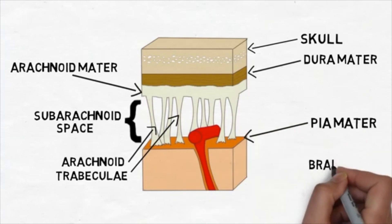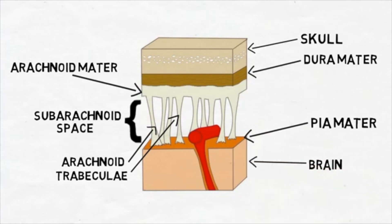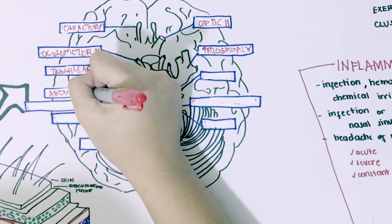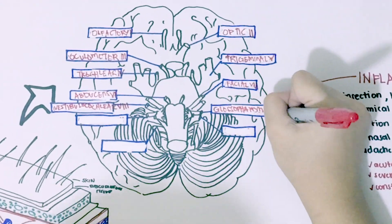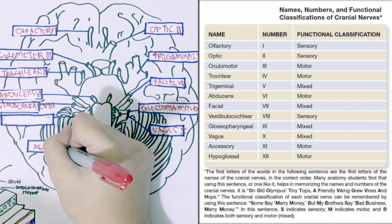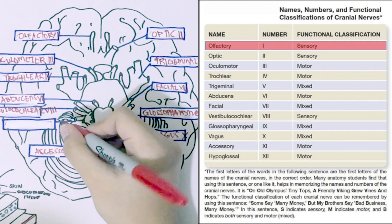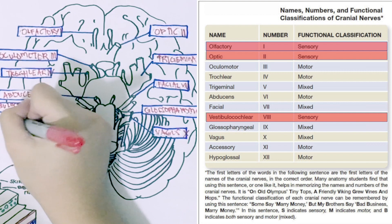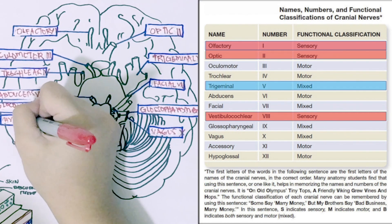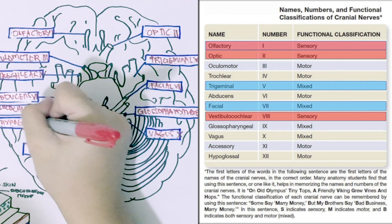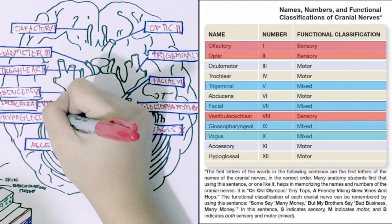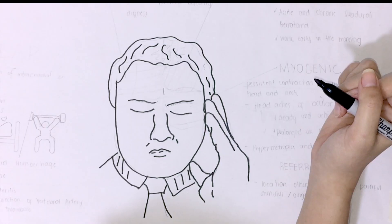The head is mainly innervated by the cranial nerves 1 to 12. Out of the 12 nerves, the olfactory, optic, and the vestibulocochlear nerves are entirely sensory, while trigeminal, facial, glossopharyngeal, and vagus nerves are both motor and sensory.